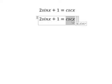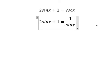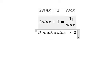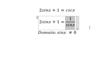Cosecant of x we change to 1 over sin(x). Next we need to know that sin(x) cannot equal zero because we have 1 over sin(x).